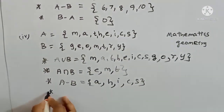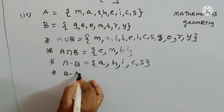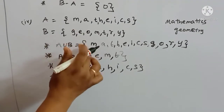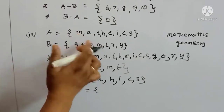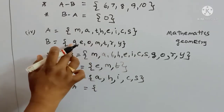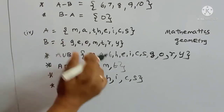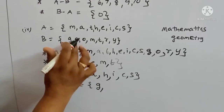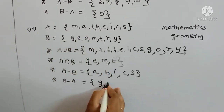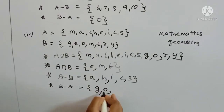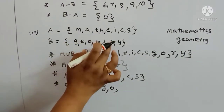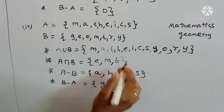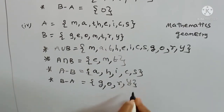B minus A — elements in B not in A. G is not in A, so include G. O is not in A. R is not in A. Y is not in A. So B minus A = {g, o, r, y}.